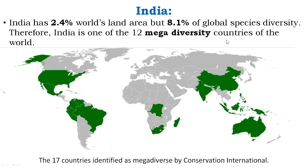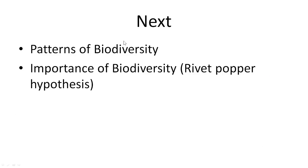Mega diversity countries are those that contain a large number of species. This picture from Wikipedia shows the 17 countries identified as mega diverse by Conservation International — shown as green-shaded regions on the map. India contributes only 2.4% of land area but 8.1% of global species diversity, making it one of these mega diverse countries.